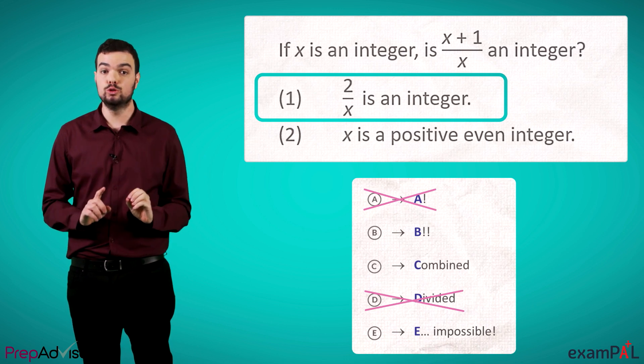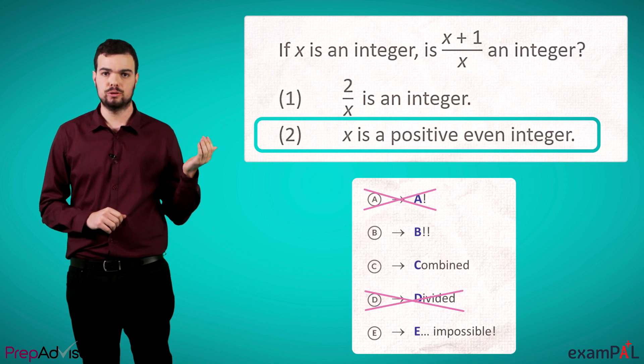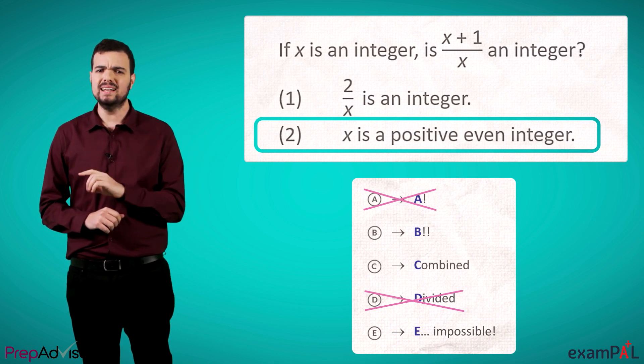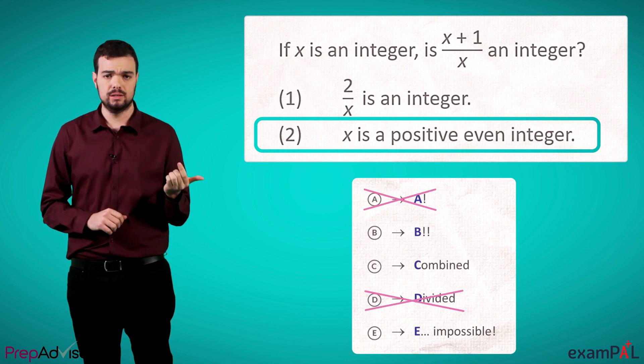Now let's look at 2 on its own. So, x is a positive even integer. Well, if x is even, then x+1 is definitely odd.